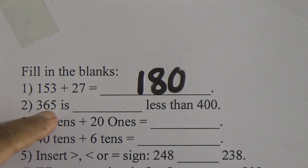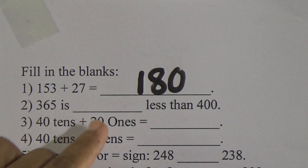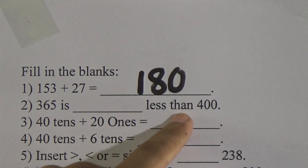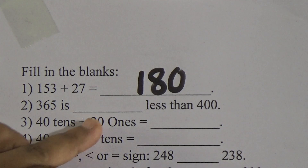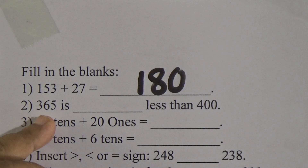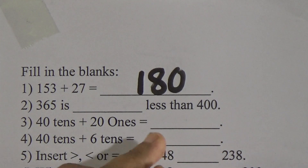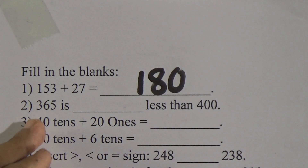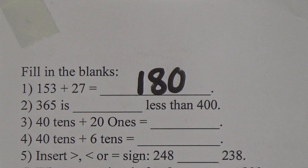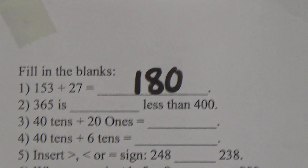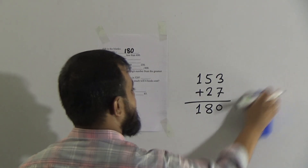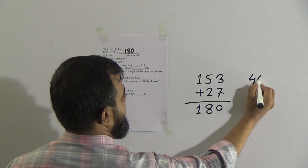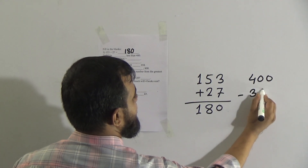Question number 2: 365 is blank less than 400. We need to find how much less 365 is than 400. That means we need to subtract 365 from 400. Do this rough work: it's 400 minus 365.